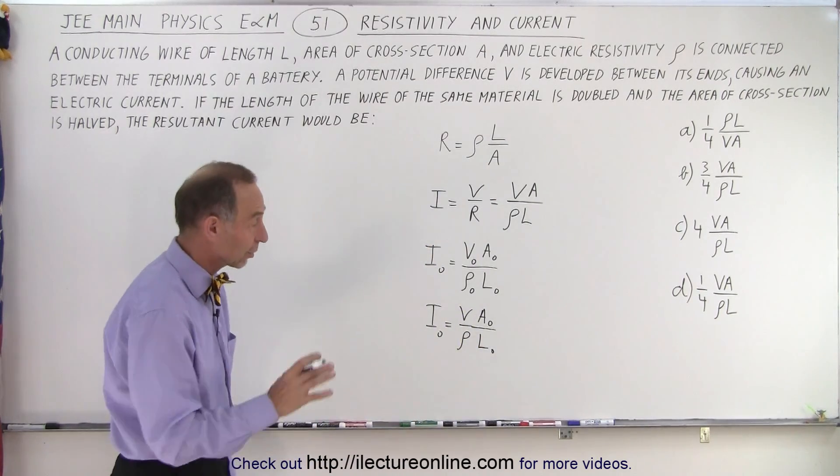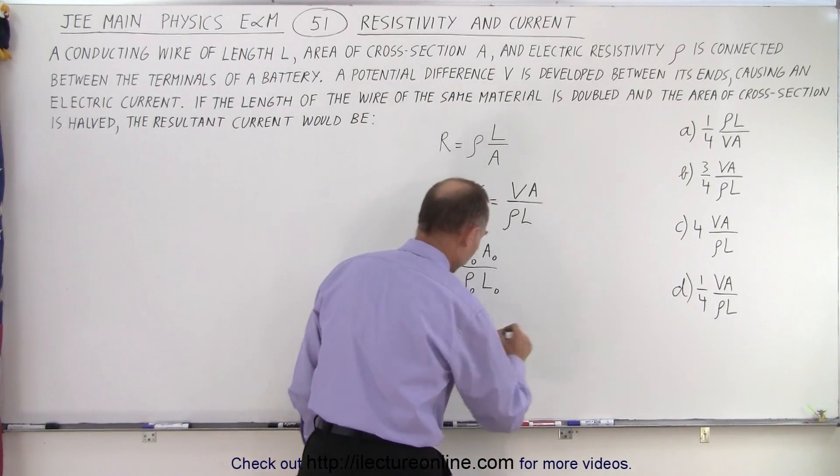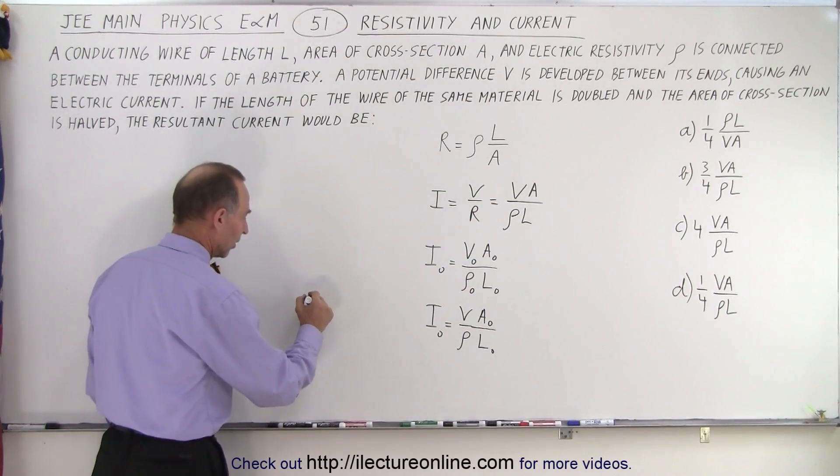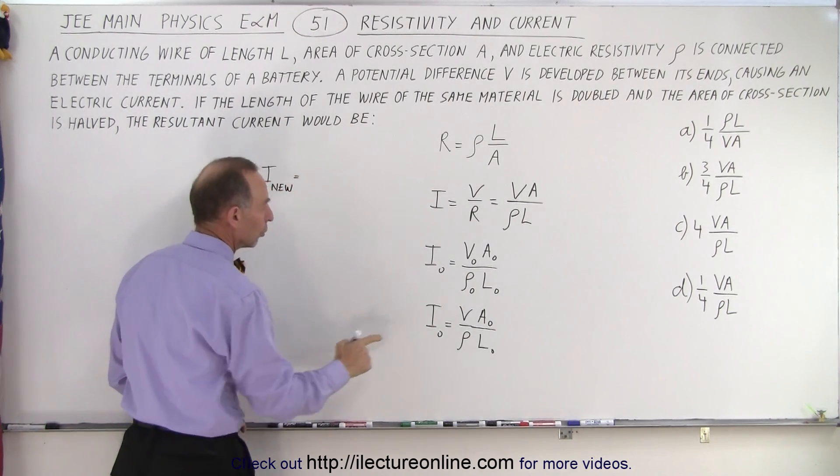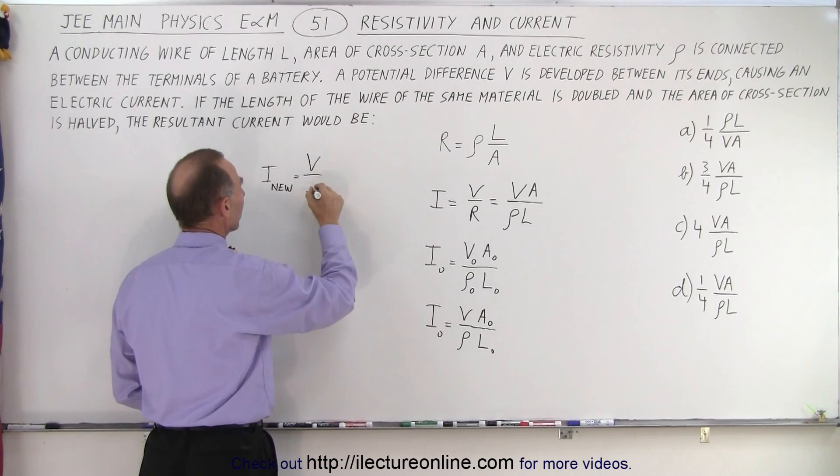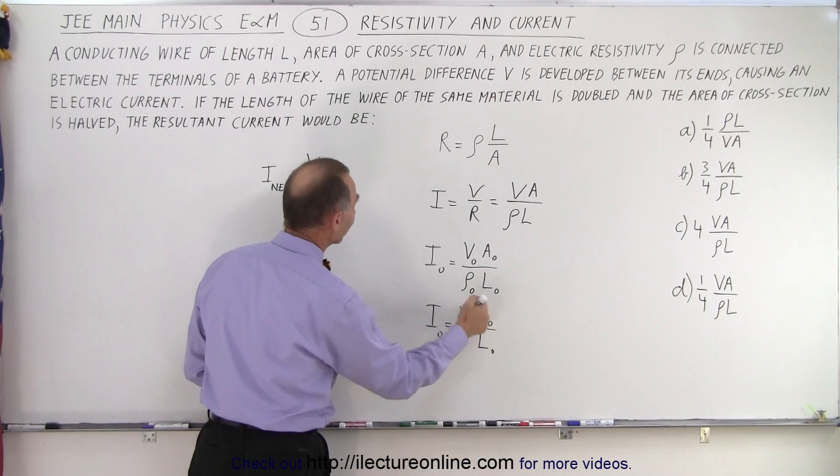Now we realize that the cross-sectional area and the length are going to change. The new current, I new, is going to be equal to V over rho. That doesn't change. But now the new area is going to be half the old area.